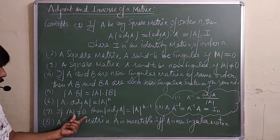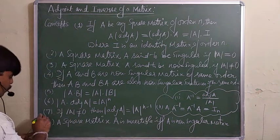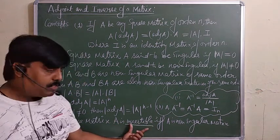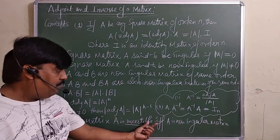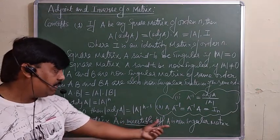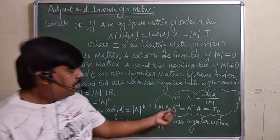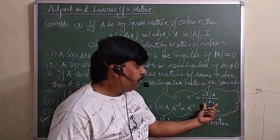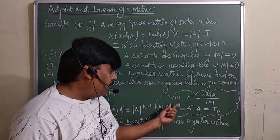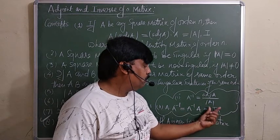A square matrix A is invertible if and only if it is non-singular, meaning det(A) ≠ 0. Only then can you find the inverse. A inverse is equal to adj(A) divided by det(A), where det(A) must not equal 0. And A·A⁻¹ = A⁻¹·A = I, the identity matrix.